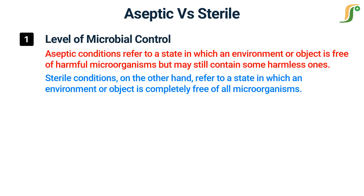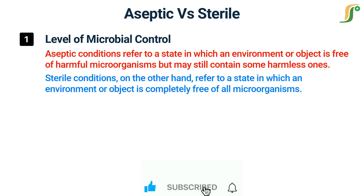Level of microbial control. Aseptic conditions refer to a state in which an environment or object is free of harmful microorganisms, but may still contain some harmless ones. Sterile conditions, on the other hand, refer to a state in which an environment or object is completely free of all microorganisms.